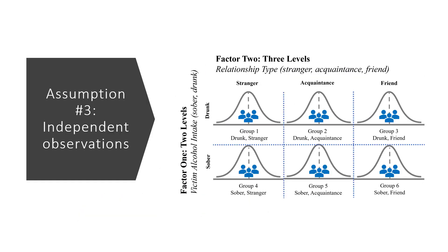Our third assumption is that participants in all six groups are different or unrelated to each other. Each participant must be completely independent from those in all other study conditions — no participant can be in more than one experimental group. For example, someone in the drunk-stranger group cannot also have read the sober-acquaintance vignette. For this study, we meet this assumption.